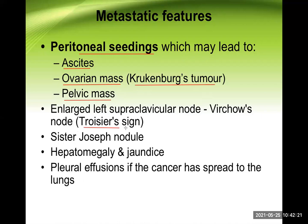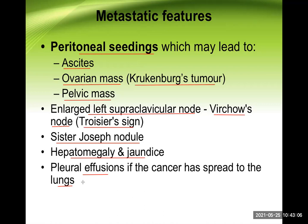Other metastatic features include hepatomegaly and jaundice because of liver metastasis; plural effusion if the cancer has spread to the lung; and cannonball appearance on chest X-ray — rounded opacities in the lung representing secondary deposits, usually bilaterally. Bone involvement and even brain involvement can also occur.